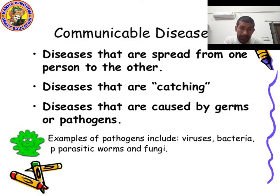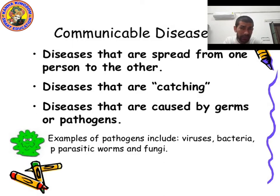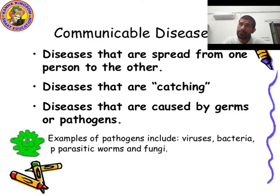There are many pathogens — harmful microorganisms. Microorganisms are small organisms you cannot see with the naked eye; you need a microscope to see them. Examples of pathogens include virus, bacteria, parasitic worms, and fungi. All these are pathogens, and due to pathogens, communicable diseases occur.